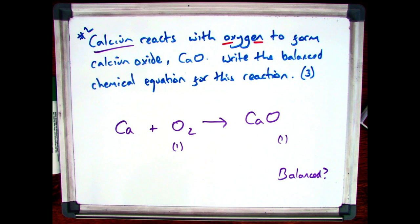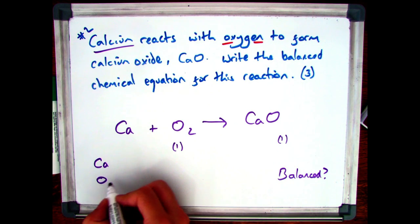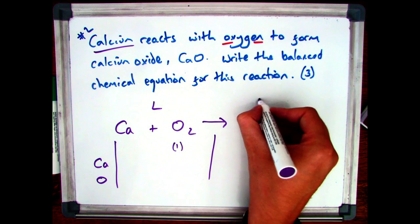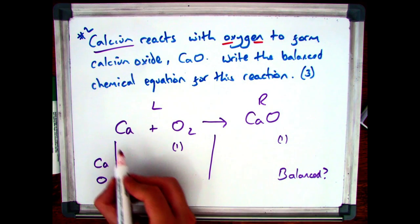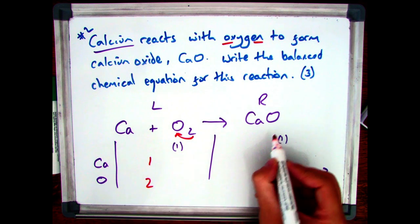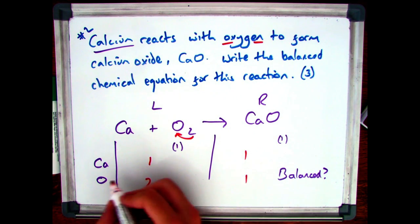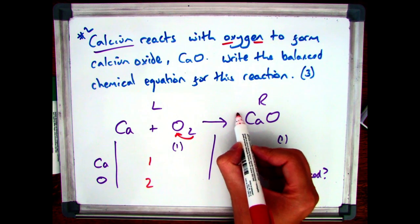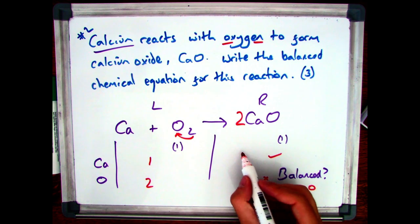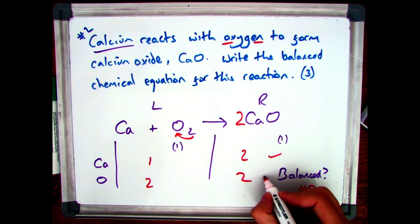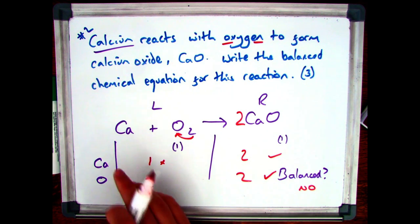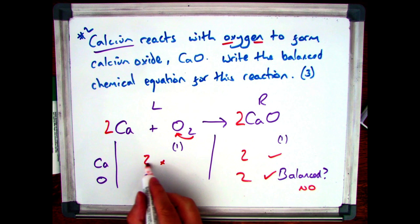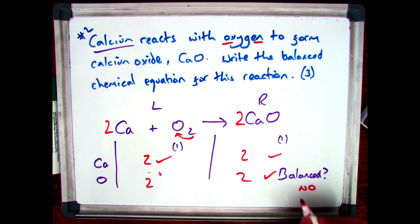All that's left now is to do the balancing. We write down the elements and find out how many on the left and right side of the arrow. In this case I have one calcium and two oxygens on the left, and one of each on the right. Oxygen is unbalanced, so I go to the right-hand side where I've only got one — I need two, so I put a two in front, remembering I can't put that little two at the end. That gives me two calciums as well as two oxygens. Oxygens are balanced but calciums aren't — I need two, so I put a two in front of Ca. That makes it balanced, giving me a third mark.